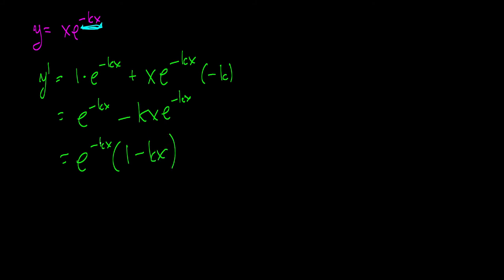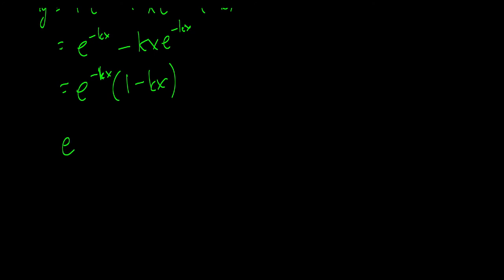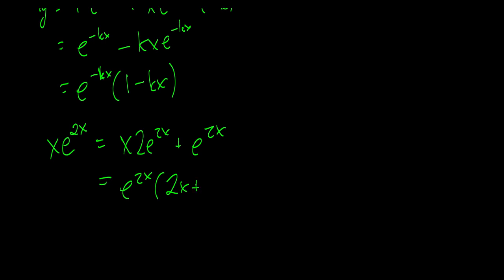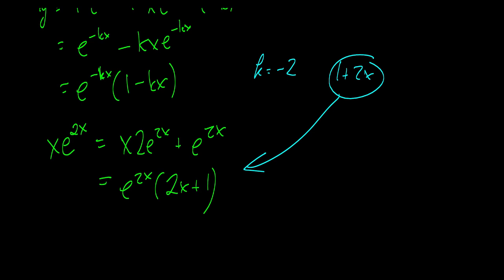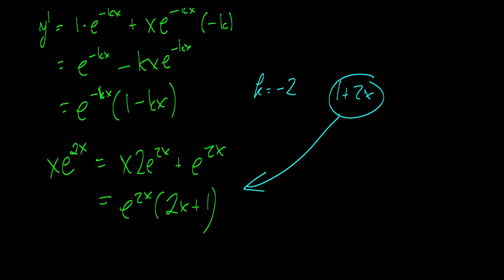You can check this for yourself. If we take x times e to the 2x, its derivative is x times 2e to the 2x plus e to the 2x, which simplifies to e to the 2x times 2x plus 1. If we let k equal negative 2 and plug it in, that gives us 1 plus 2x — which matches. So you can either remember this formula for x times e to the negative kx, or just derive it every time, which will become much faster with practice.